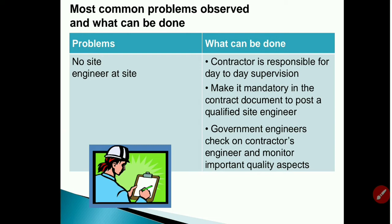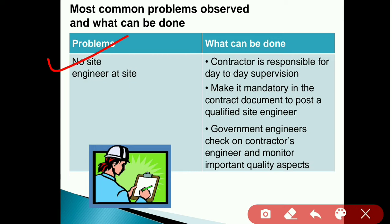Next common problem: no site engineer. If there is no site engineer, then the contractor is responsible for day-to-day supervision. Make it mandatory in the contract document to post a qualified site engineer. Government engineers check on contractors' engineers at site and monitor important quality aspects.